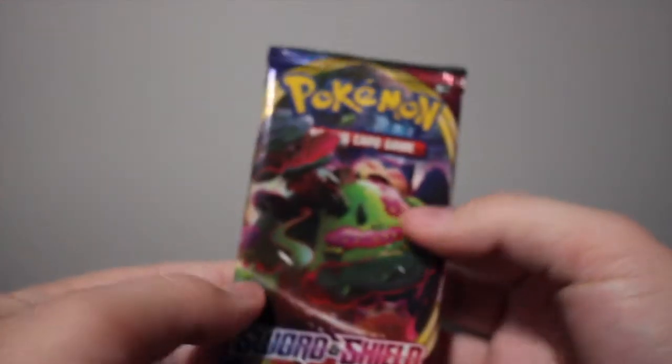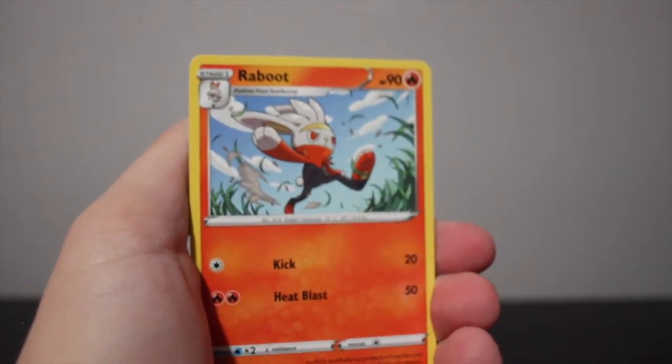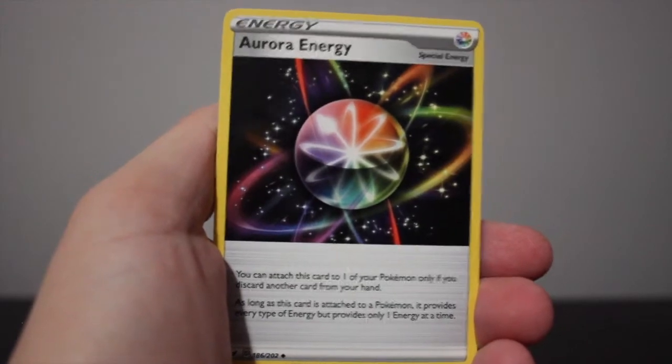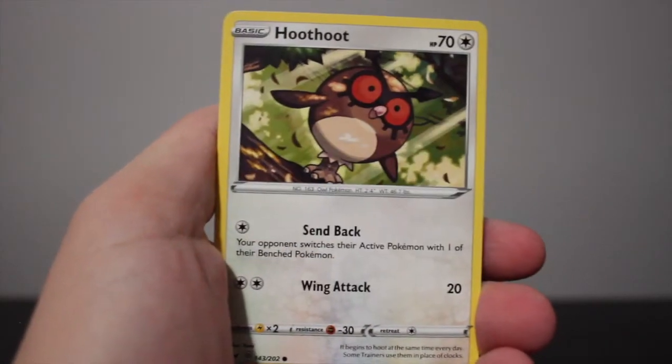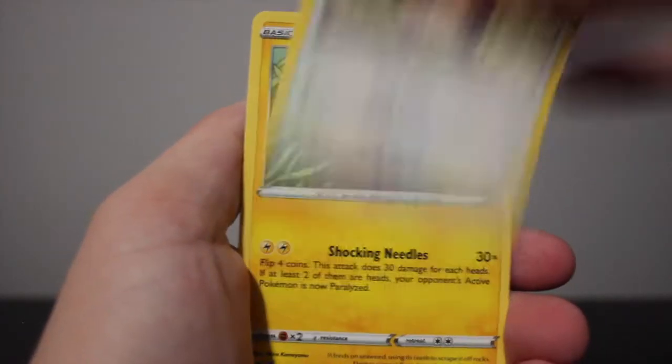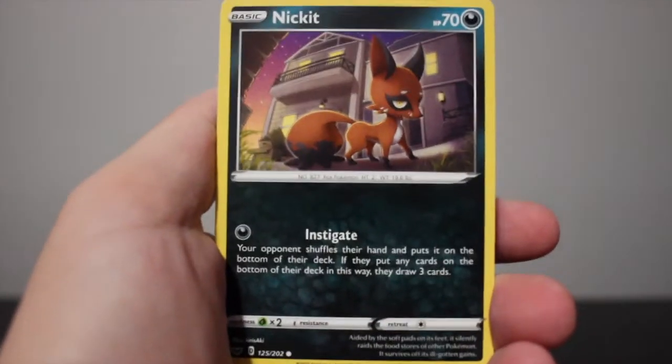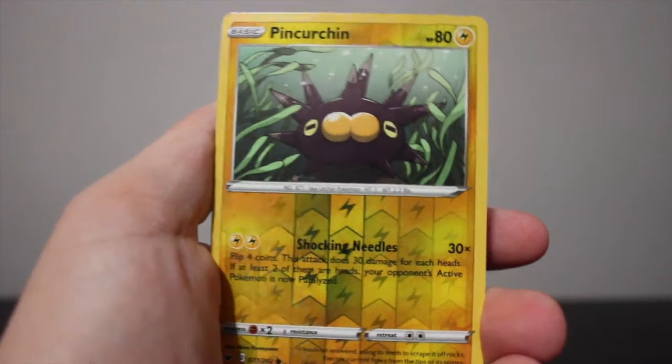Alrighty, pack number two. Okie dokie, what will we get in this one? A Raboot, a Lum Berry, Aurora Energy, Mudbray, Hoothoot, Pincurchin, Vulpix, Nickit, Pincurchin again. And the rare is a non-holo Morpeko.